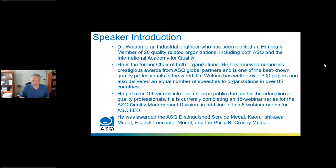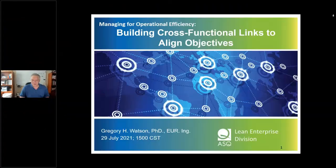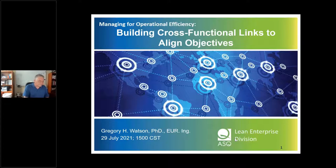Dr. Watson, I'm going to make you the presenter, and you can take it away. Tonight we're going to talk about building cross-functional links to align objectives. And this is kind of a code word for the Japanese system of Hoshin-Kanri. I want to give you some historical context tonight about where this came from, and also a cultural context for how it developed in Japan. I've actually traced that there are six different types of Hoshin-Kanri models that have been used since approximately 1990.